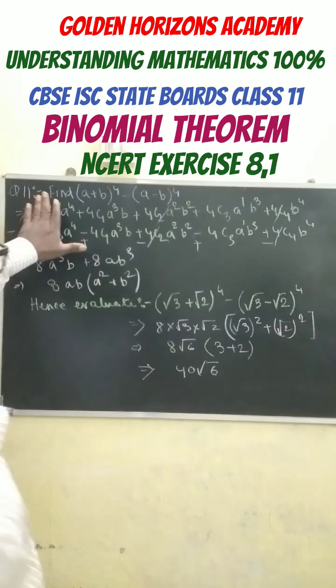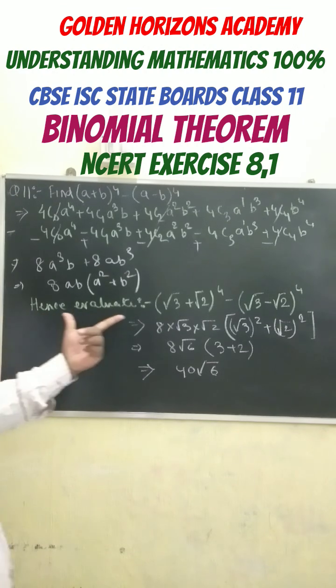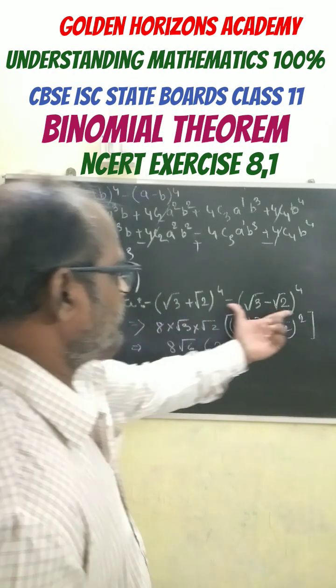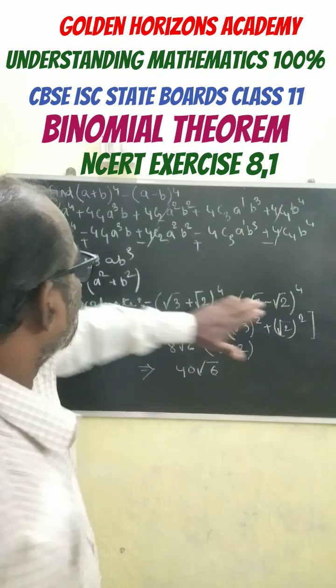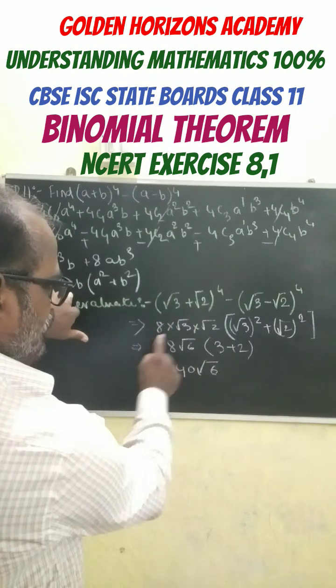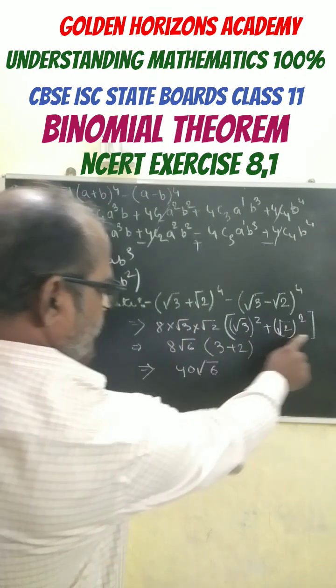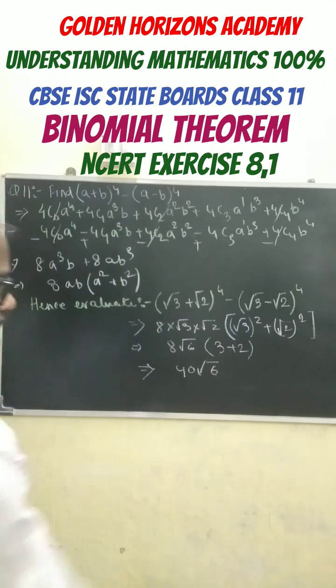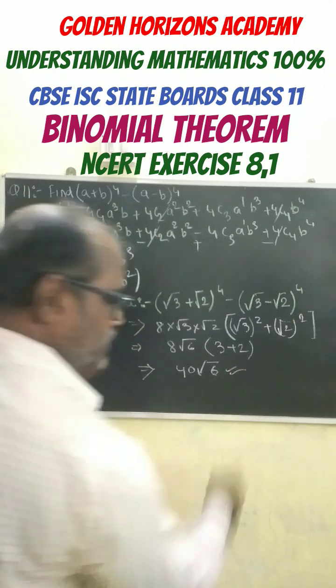In the first question, with this question it was given that hence evaluate √3 plus this one in this format. So if we evaluate, we got 8ab here, a is this one and b is this one, so 8√3 into √2, like this we can write down. Finally, our answer becomes 40√6.